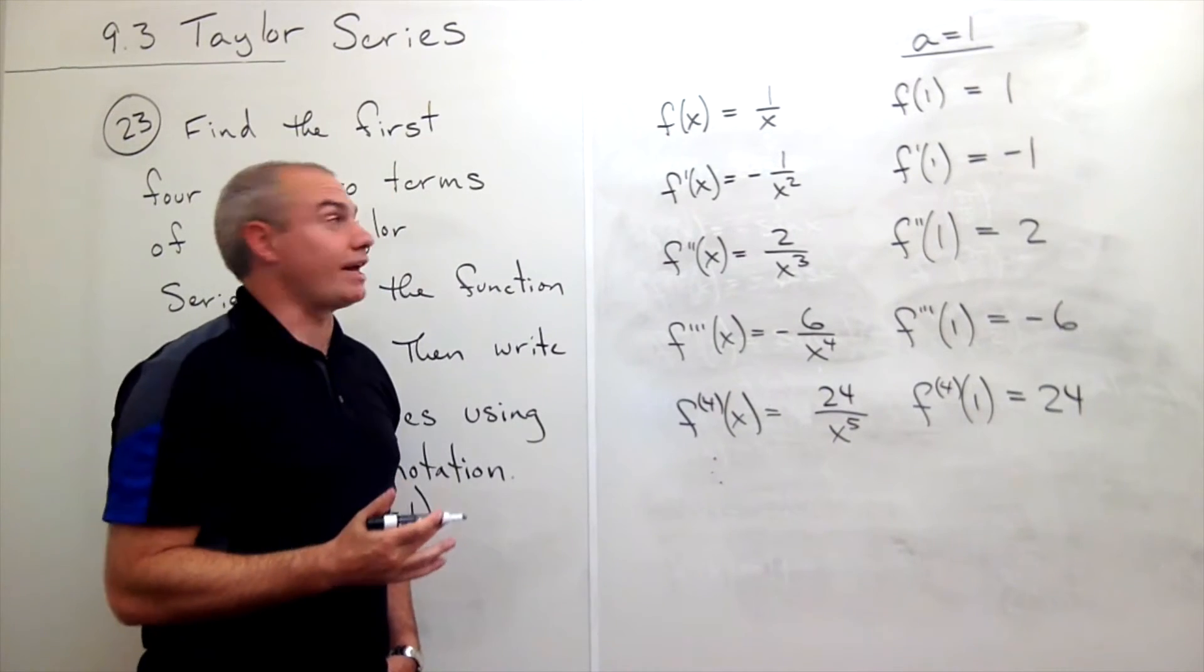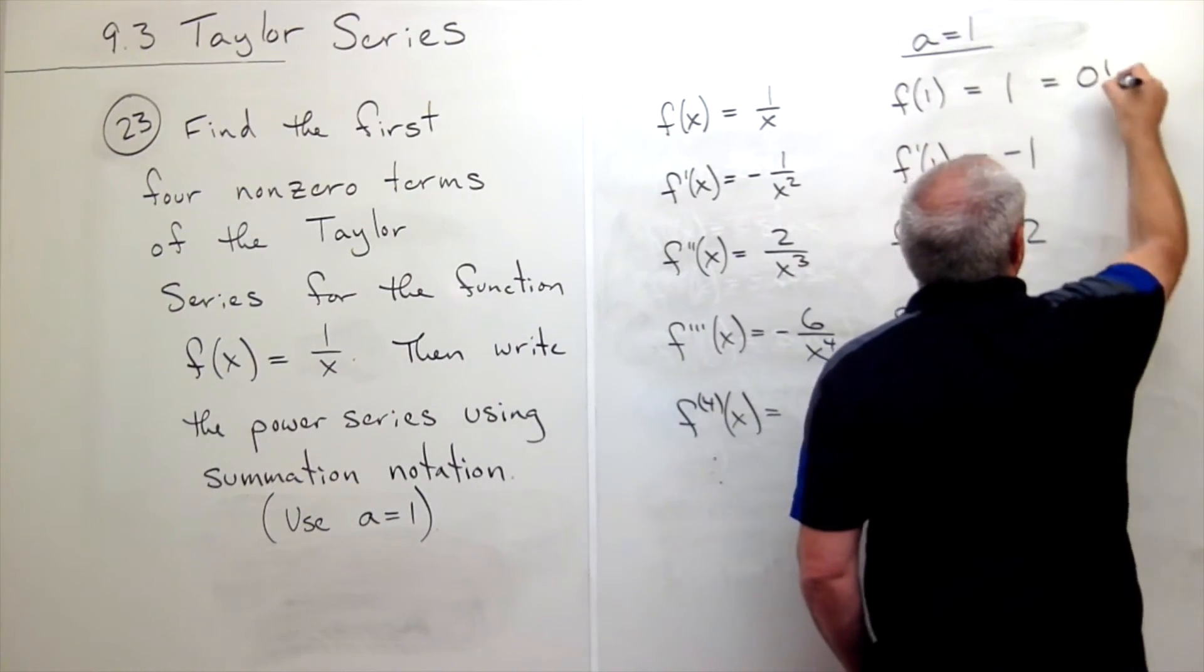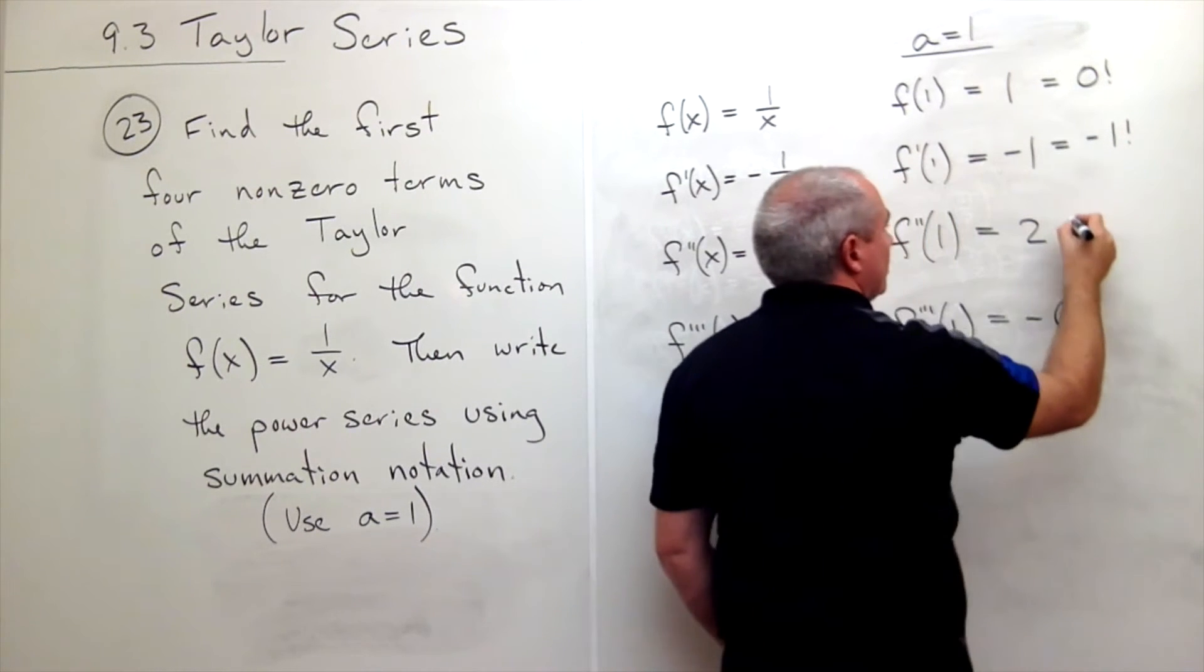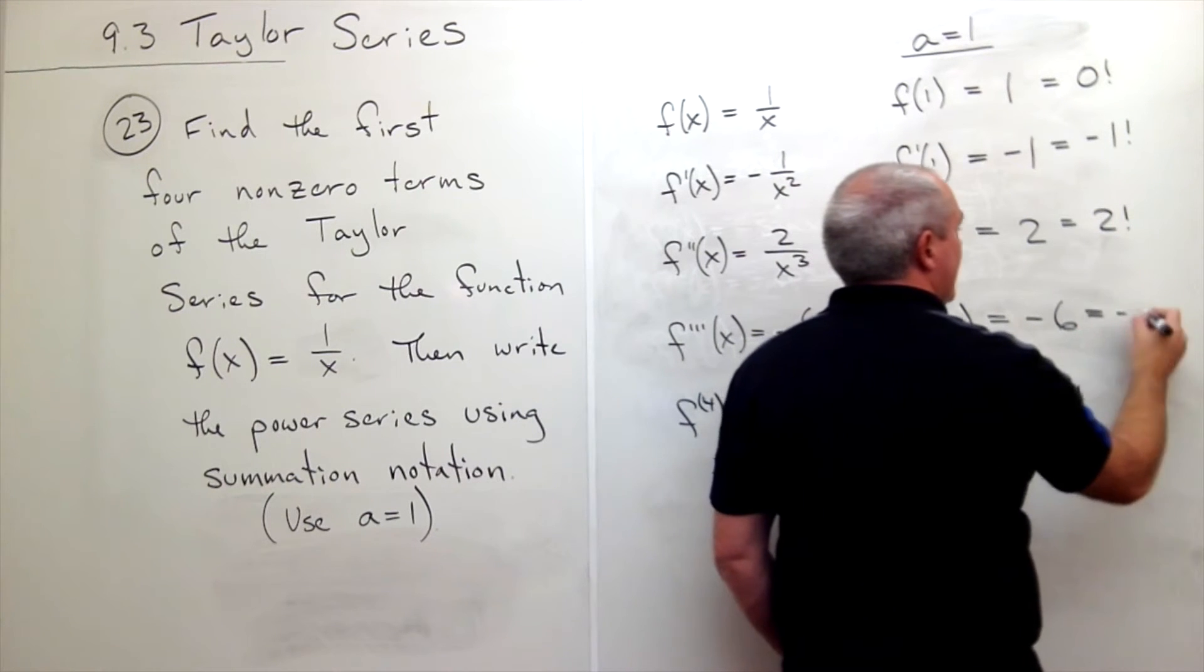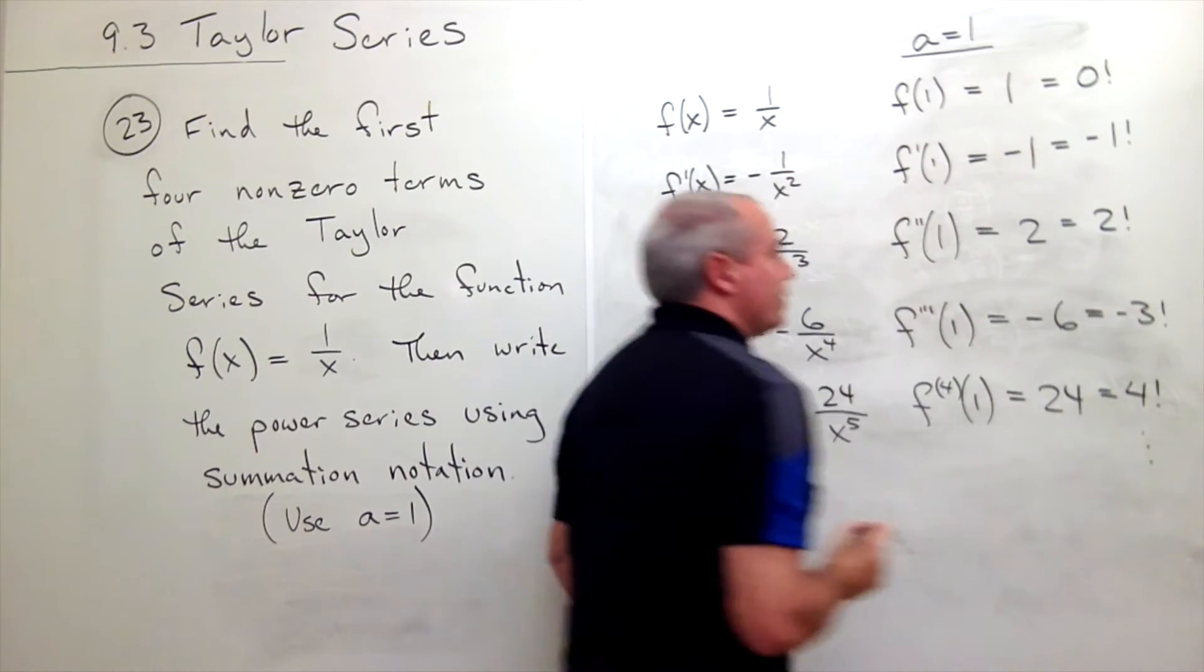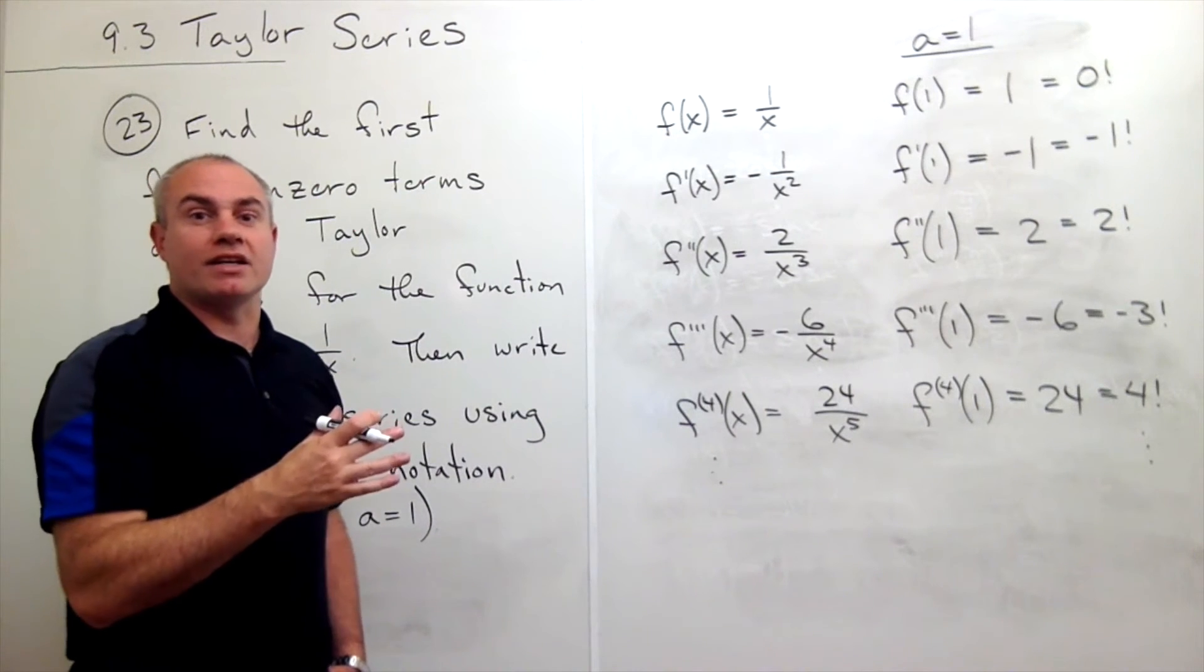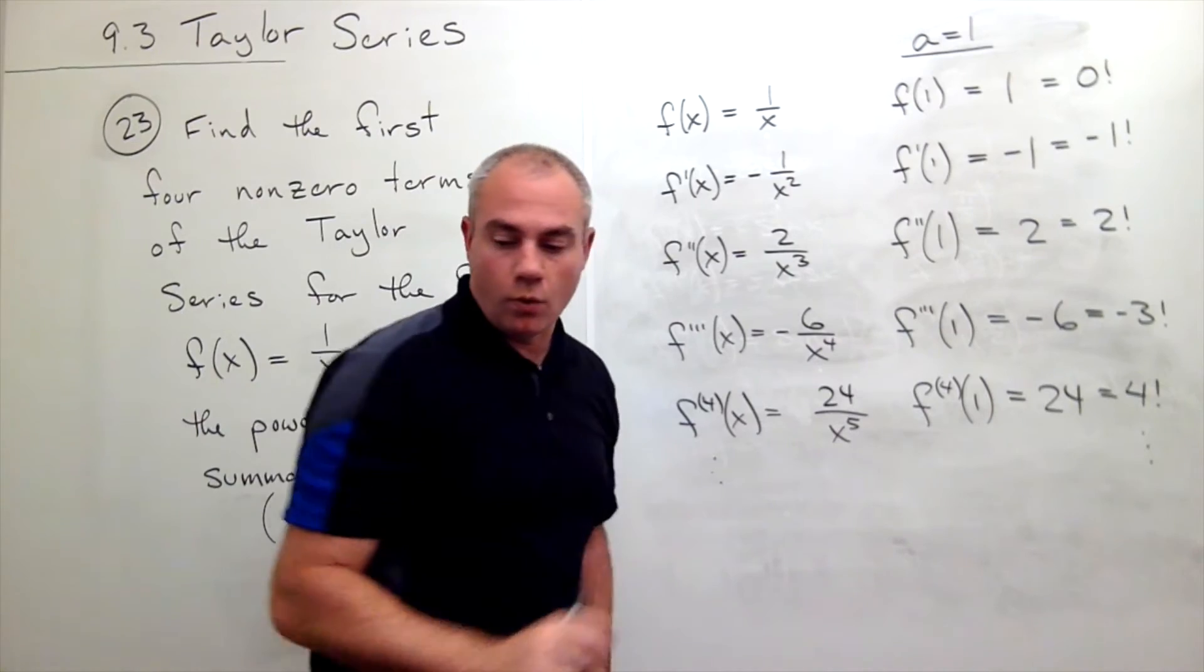Now I'd like you to notice something: that 1 is also known as 0 factorial, negative 1 is negative 1 factorial, 2 is 2 factorial, negative 6 is negative 3 factorial, 24 is 4 factorial. And I think we see a pattern here—we're going positive, negative, positive, negative, but every time it's a factorial.